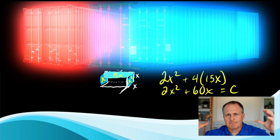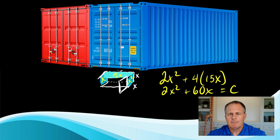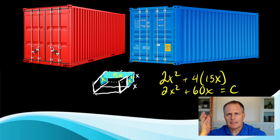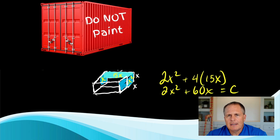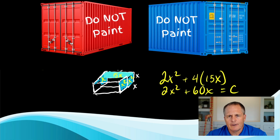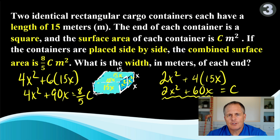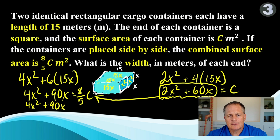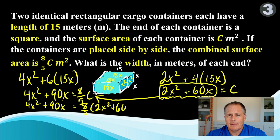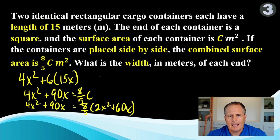Now we have to smash the two containers together and imagine painting the larger combined container. It's pretty much the same as painting the two separate containers, but we don't need to paint these two sides in the middle, so we can remove those from the total. It says that this total should be equal to 8 fifths c. Since we have two equations, this is a system of equations, and we can use the substitution method to place 2x squared plus 60x in for c and solve the combined equation.